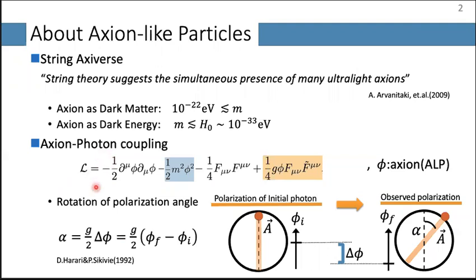In this talk, we use the following simple Lagrangian. Phi is an axion or axion-like particle. We use the mass term potential of the axion and the axion-photon coupling. This coupling changes the equations of motion of the electromagnetic field and rotates the polarization angle of the photon. When a photon travels over the axion background, its polarization angle rotates by the rotation angle alpha, which is given by the difference of the axion field value.